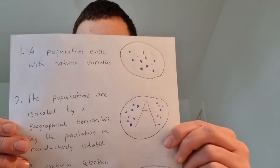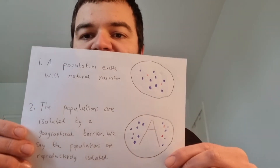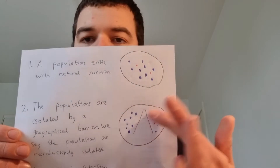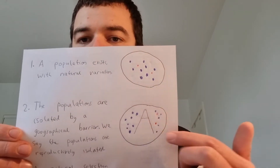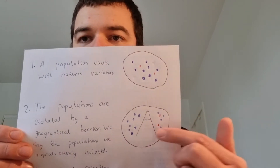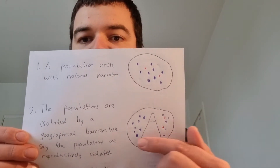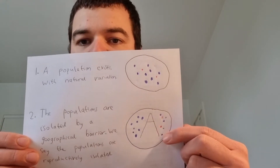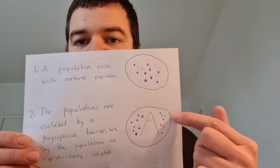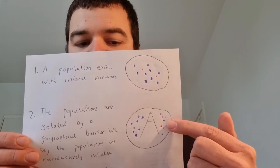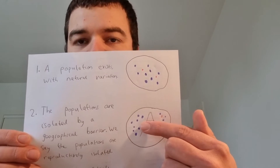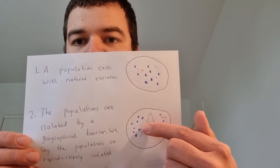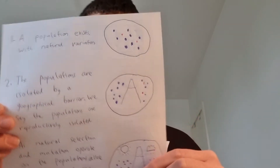As a result of that, we say the populations have been reproductively isolated. When they're separated, they've got different variation just due to natural variation, and now they are isolated from one another. That means an individual in one population can't easily interbreed with individuals in the other population — or probably not at all.